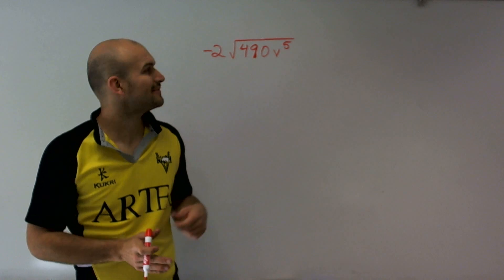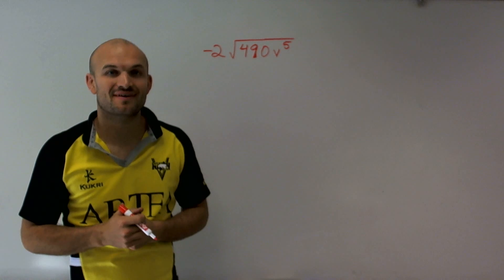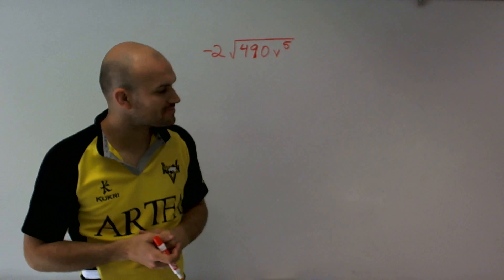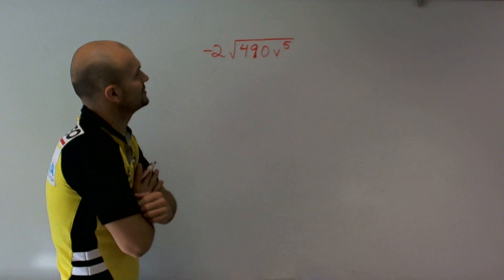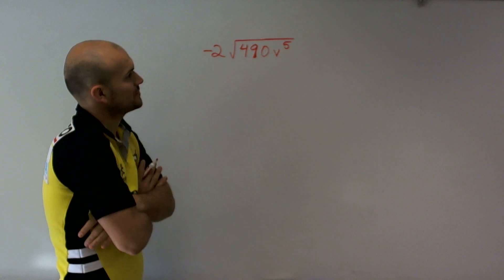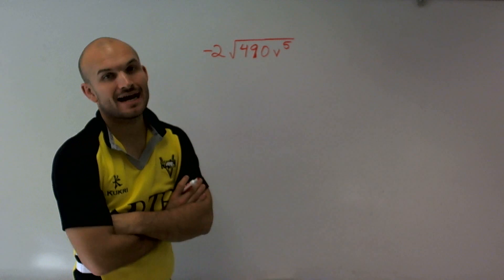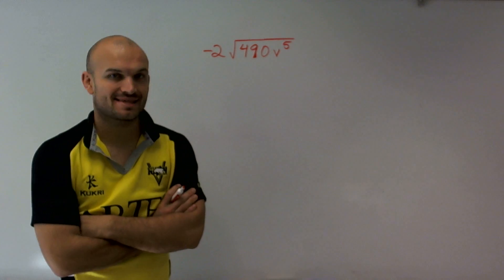Welcome. What I want to do today is show you how to simplify this radical expression. I have negative 2 times the square root of 490 times b to the 5th.